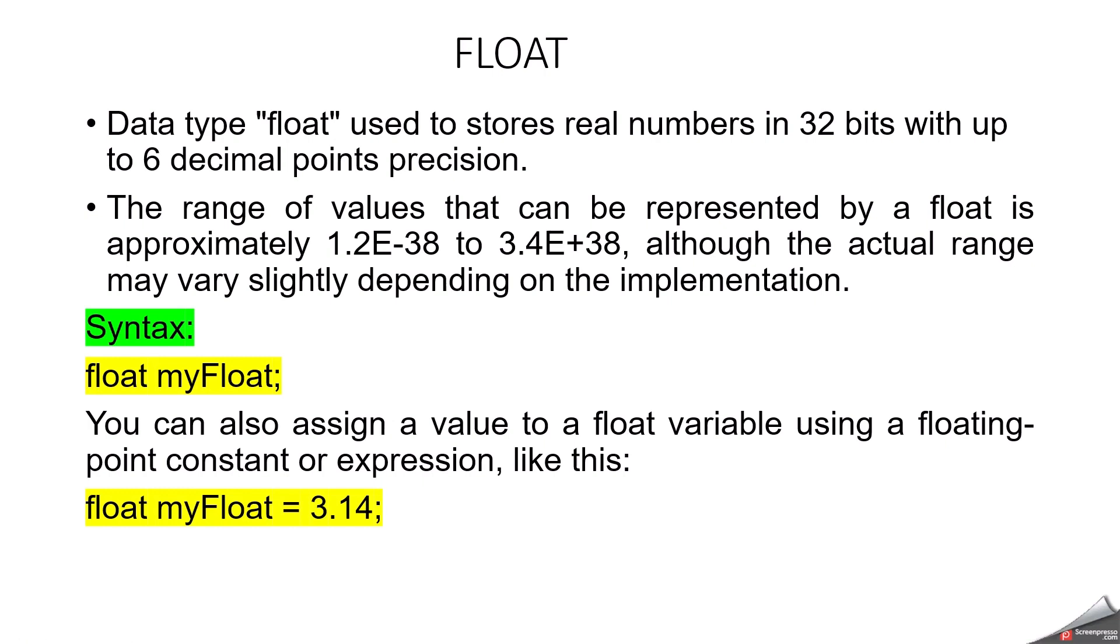Float. Data type float is used to store real numbers in 32 bits with up to 6 decimal points precision. 6 points or might be in some way you can consider like 7 points including one real number dot. Basically it will come up with 6 decimal points precision. The range of value that can be represented by a float is approximately 1.2e-38 to 3.4e+38. Based on that you can select the floating point value. Where we will use the float? For example in your program you will declare like 1.4 or 3.14. Simply you want to deal with float numbers or decimal points precision. So in that case generally we will use float.